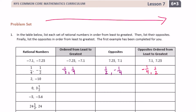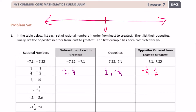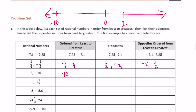For the next one, we have two and negative ten. We have zero, and two might be right there, with negative ten all the way down here. So in order from least to greatest — their opposites would be ten and negative two. When we order the opposites from least to greatest, the order's flipped again: we have negative two and ten.